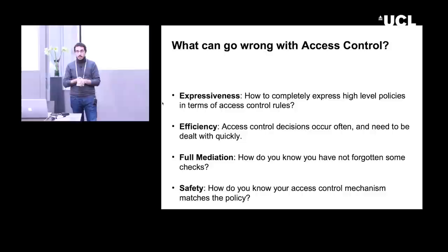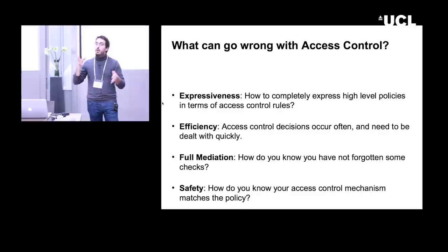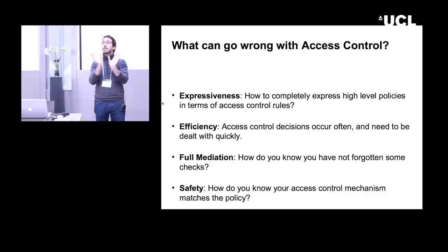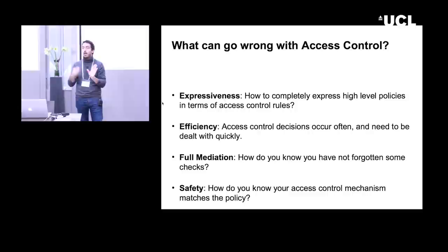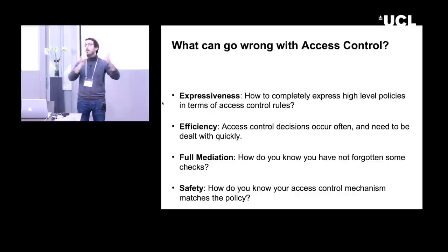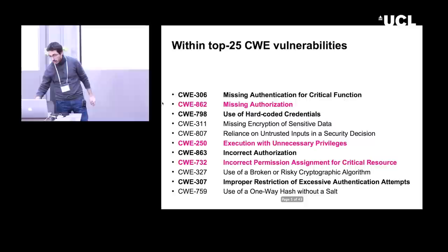Finally, there is the problem of safety. We have policies and mechanisms, and the important thing is to actually make a security argument that the mechanism really does implement the policy. Can we systematically argue that an access control system with all its parameters, configurations, and data indeed implements a particular set of policy goals? We will see that this is harder than it seems.